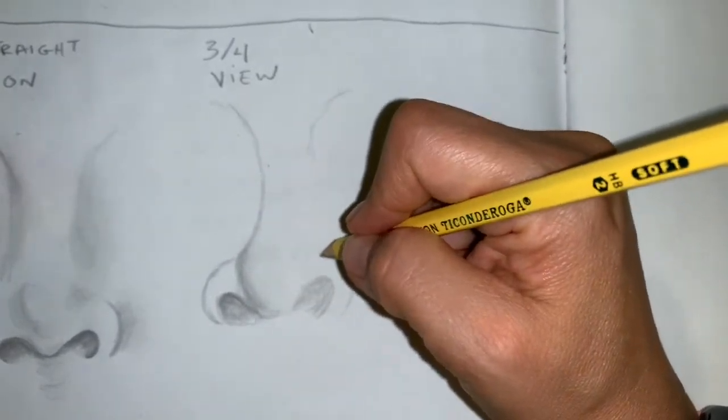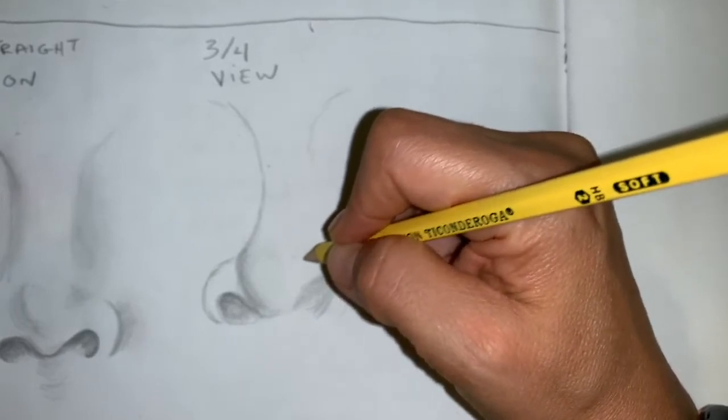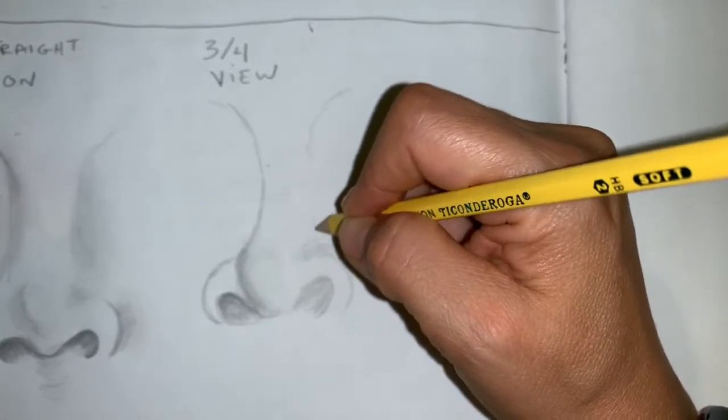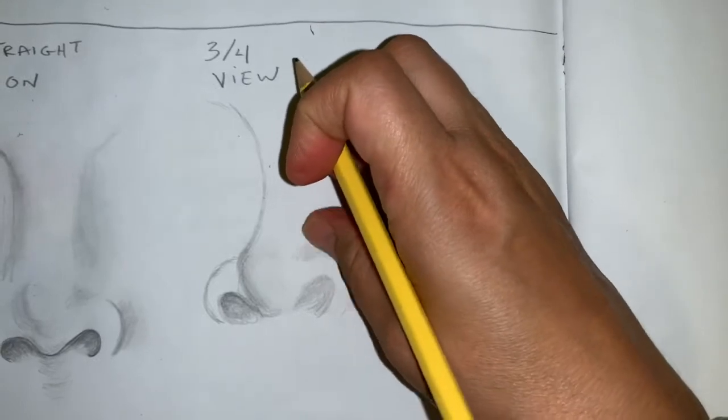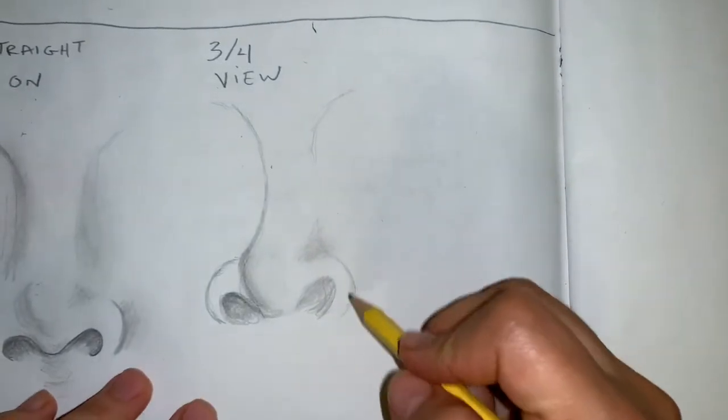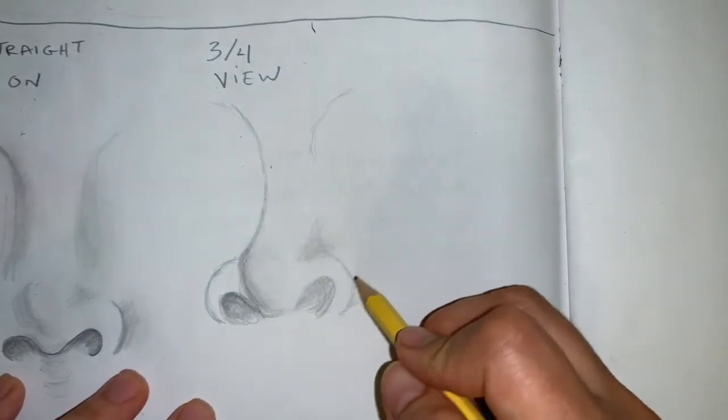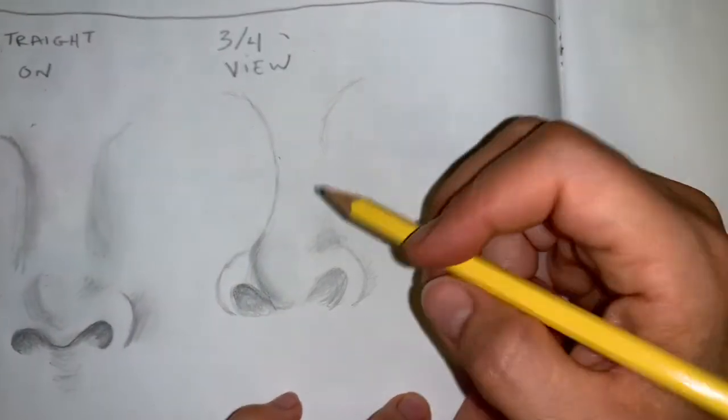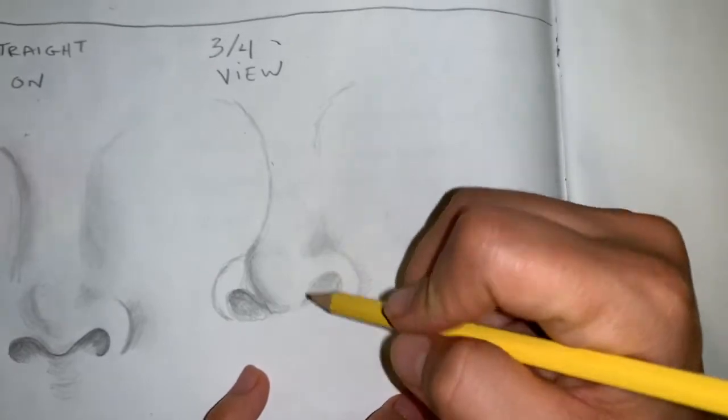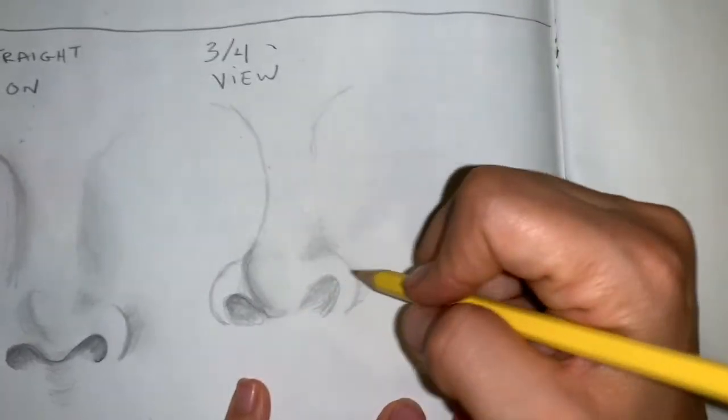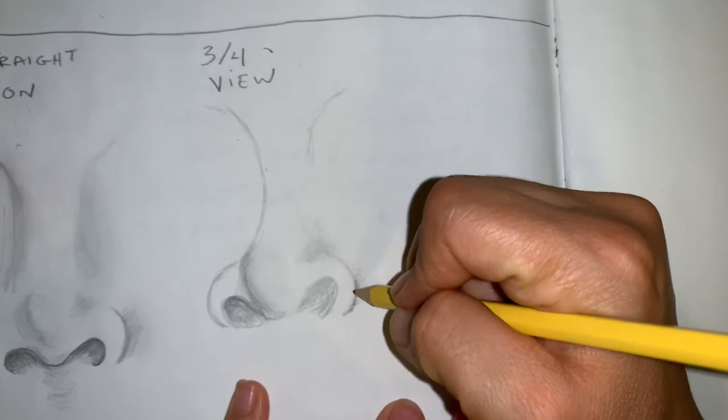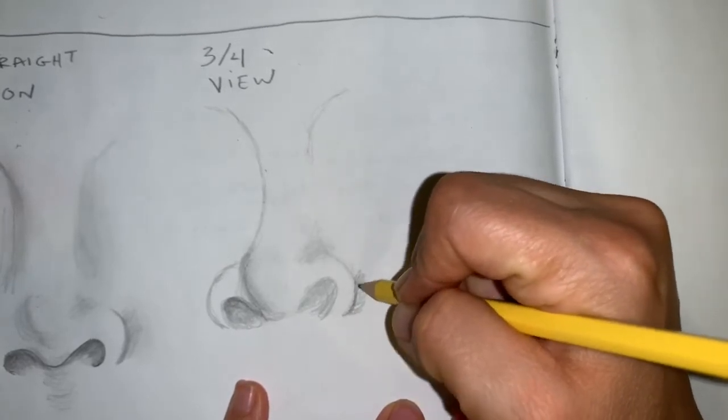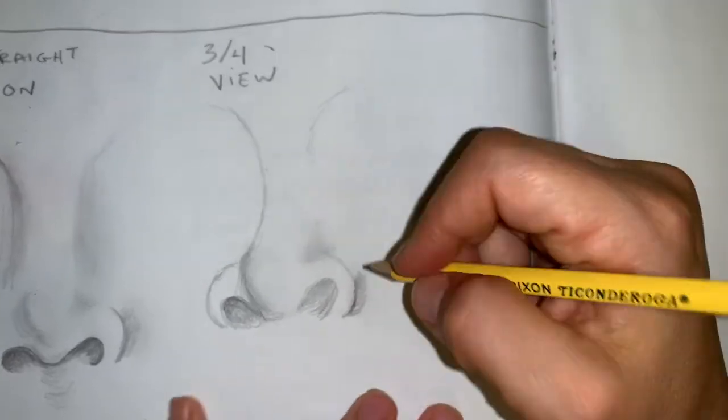We're going to add shadow here. We just have to keep defining. We're going to increase our shadow here and smudge it so it doesn't look so forced.